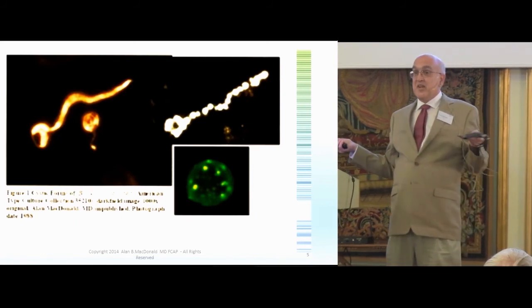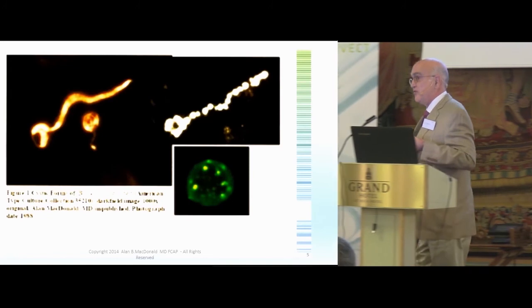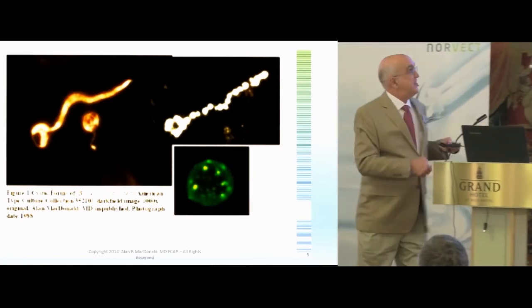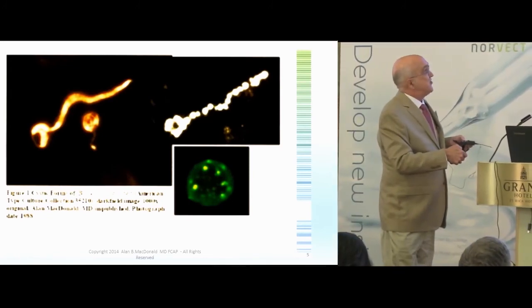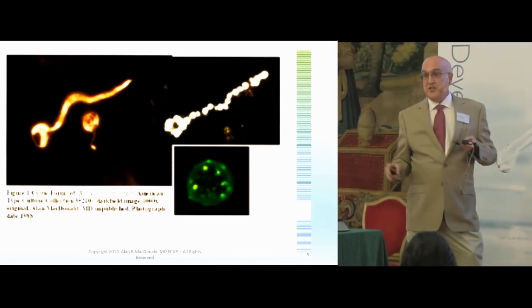It has one chromosome. It has 20 plasmids or whatever Borrelia usually has. And each of these granular units, or these granular units, is enough to make the spirochete.